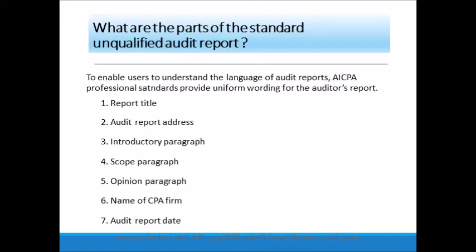To enable users to understand the language of the auditor's report, the professional standards issued by the American Institute of Certified Public Accountants provide uniform wording for the auditor's report. The standard unqualified audit report contains seven parts: report title, report address, introductory paragraph, scope paragraph, opinion paragraph, name of CPA firm, and report date.